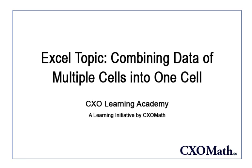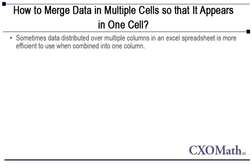In this video, I'm going to talk about the function concatenate, which is merging data in multiple cells so that it appears in one cell. Sometimes, data distributed over multiple columns in an Excel spreadsheet is more efficient to use when combined into one column.